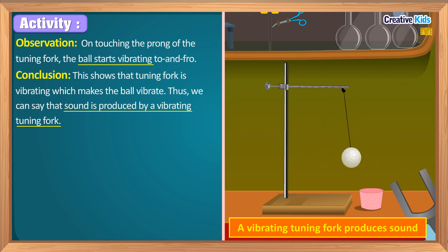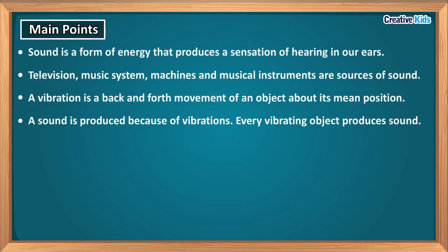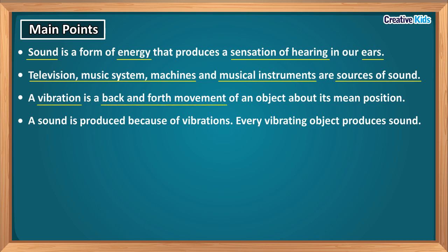We have now completed this module. Let us revise the main points. First, sound is a form of energy that produces a sensation of hearing in our ears. Television, music systems, machines, and musical instruments are sources of sound. A vibration is a back and forth movement of an object about its mean position. Sound is produced because of vibrations, and every vibrating object produces sound.